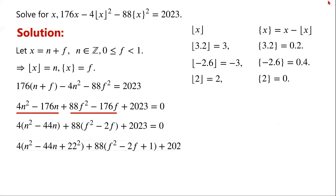To complete the squares, we add 4 times 22 squared and add 88 to the equation. Of course, we also need to add negative 4 times 22 squared and negative 88 so that the equation still holds. So the equation becomes: 4 times (n squared minus 44n plus 22 squared), plus 88 times (f squared minus 2f plus 1), plus 2023, minus 4 times 22 squared, minus 88, equals 0.